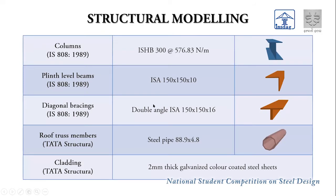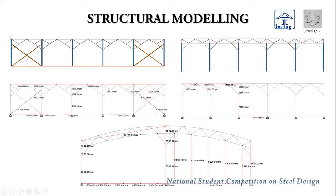For the structural modeling, column sections follow IS-808-1989 using ISHB300 at 576 N/m. Plinth level beams, used to connect cladding at the bottom, are angle sections of 150×150×10. Diagonal bracings to resist lateral sway use double angle ISHB 150×150×16. Roof truss members use steel pipe specifications from Tata Structura as taken in STAAD.Pro, and cladding is 2mm thick galvanized color-coated sheet.